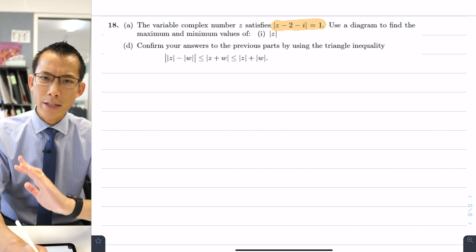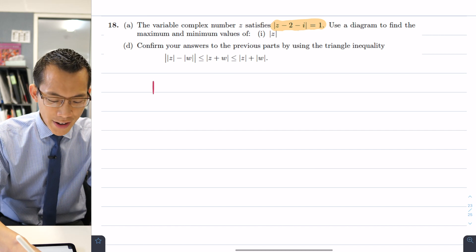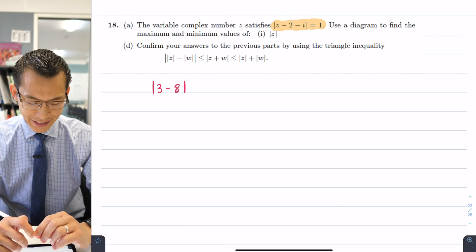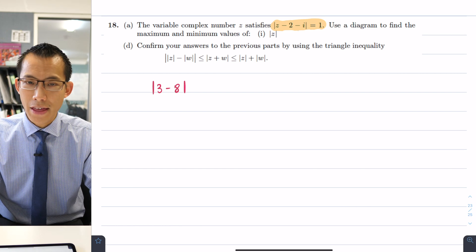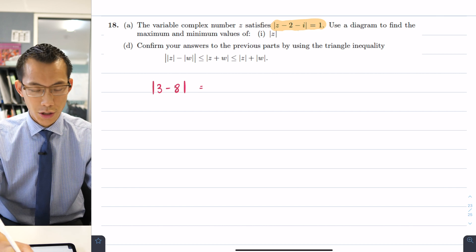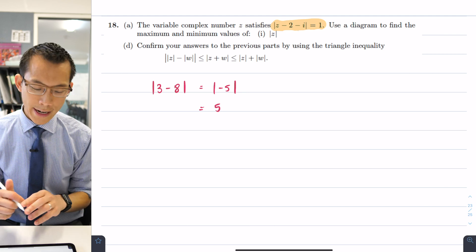So let's think about a really simple example. Let's go back to real numbers before we get too deep into the complex numbers here. If I ask you what's the absolute value of 3 take away 8? Hopefully you're familiar enough with absolute values and just arithmetic now that you can say that's the absolute value of negative 5 and that's 5 and you would be correct.